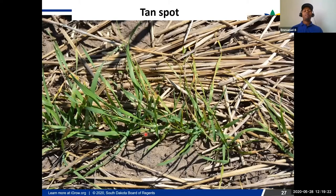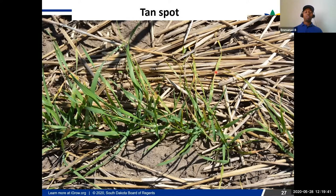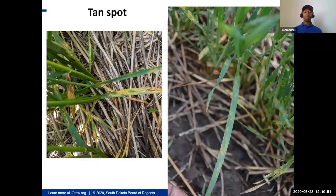In small grains, several diseases can affect wheat early in the season. The first is tan spot, which is common where straw from a previous crop is present. An early onset of this disease will affect tillering, plant vigor, and ultimately yield. The straw is the source of the disease, and you can see heavy leaf spotting on the lower leaves because of tan spot.